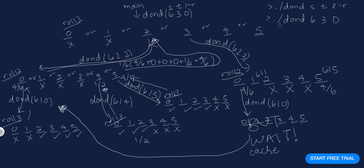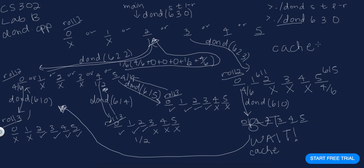So this was an example of DOND — dice or no dice — for CS302 Lab B, dice-or-no-dice.cpp, using 6, 3, and 0 as parameters. One implementation hint: make your cache as a vector of vectors. You don't need to worry about S — it always stays the same. Cache T and S as your two dimensions.